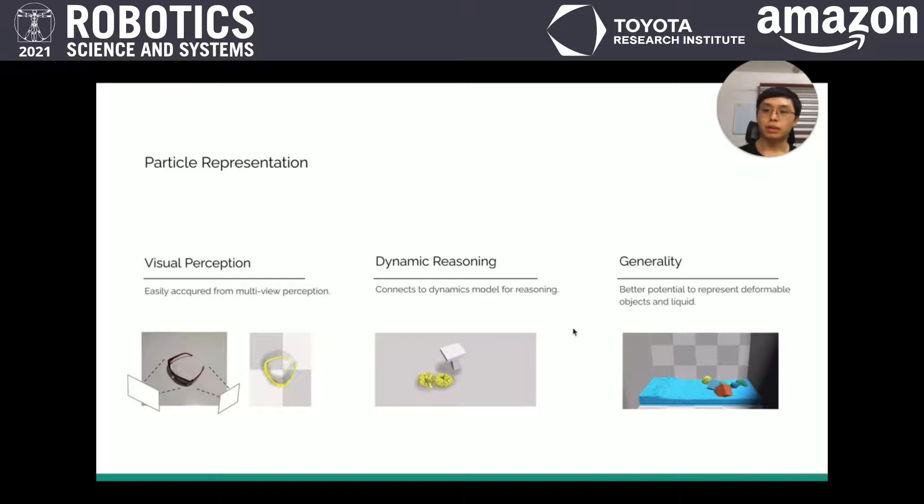Some people may ask, particle representation is not new, so why we couldn't do it in the past and why we can do it now. It is because nowadays we can afford much more computation power to have better and faster particle-based simulation to enable online reasoning. That's also why we want to raise attention to particle representation in the robotics field.